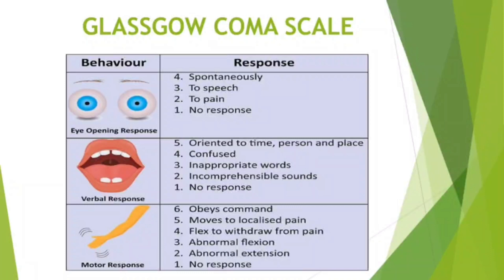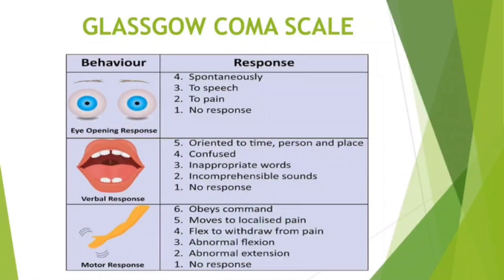The Glasgow Coma Scale is scored between 3 and 15, with 3 being the worst and 15 being the best. It is composed of three parameters. Eye-opening response ranges from 4 to 1: spontaneously, to speech, to pain, and no response.